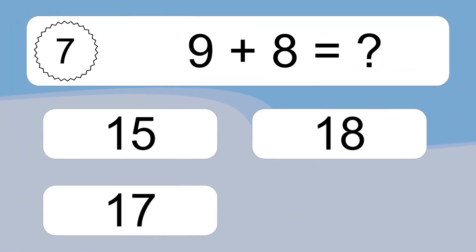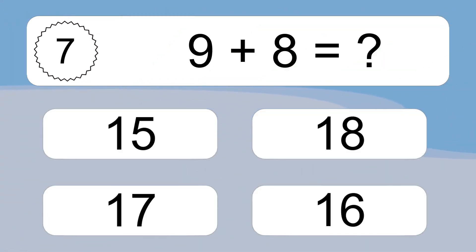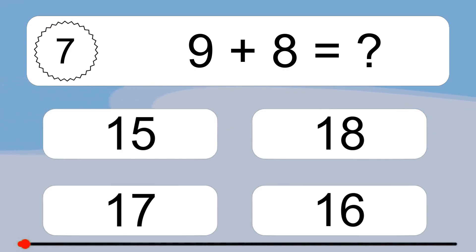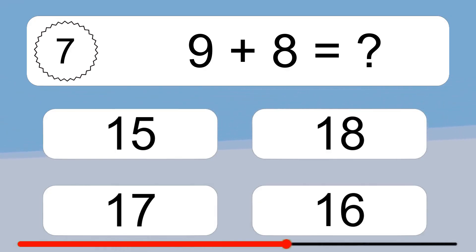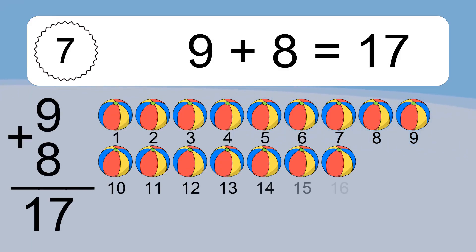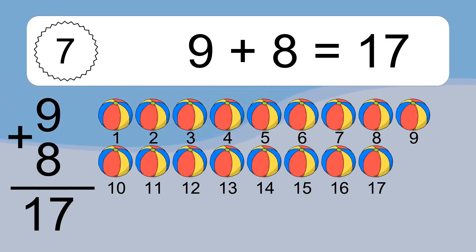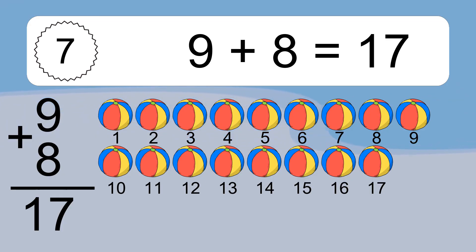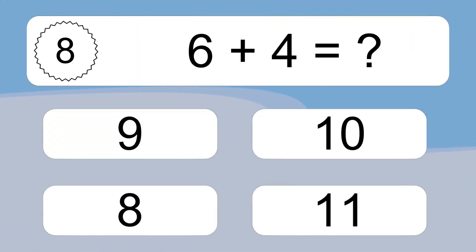9 plus 8 equals what? 9 plus 8 equals 17. Let's count it: 1, 2, 3, 4, 5, 6, 7, 8, 9, 10, 11, 12, 13, 14, 15, 16, 17.